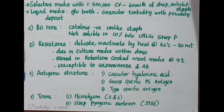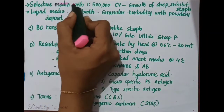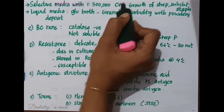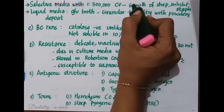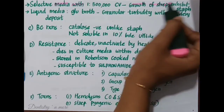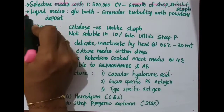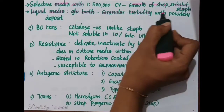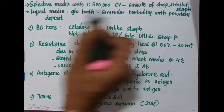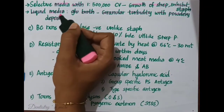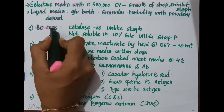Selective media with 1 in 500,000 crystal violet helps in the growth of Streptococcus and inhibits the growth of Staphylococcus. In liquid media like glucose broth, granular turbidity with a powdery deposit is seen, as the heavier chains settle down.